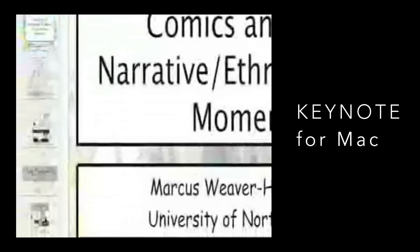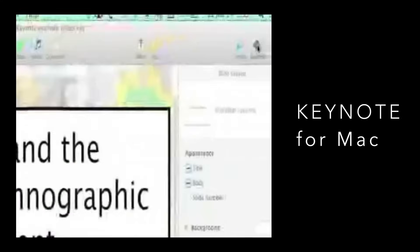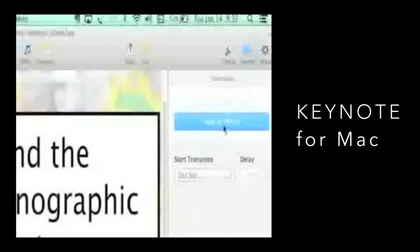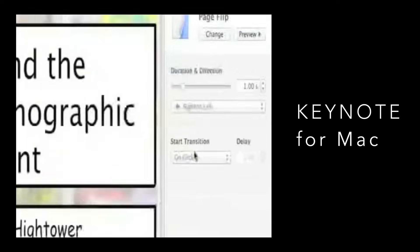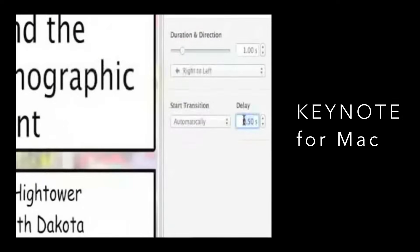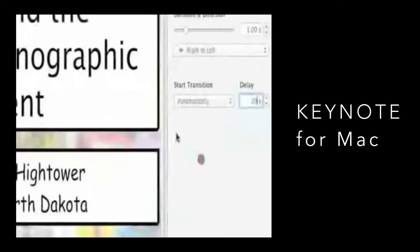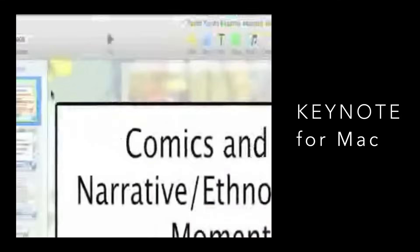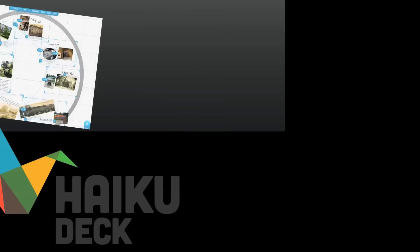Keynote for Mac is similar to set up. Select all your slides, click the Animate menu, click Add Effect, then choose a simple transition. In the contextual menu below, click to pull down the menu for Start Transition and choose Automatically. Enter 20 seconds in the Delay text box. If you're successful, a blue triangle shows up in the thumbnails for the slides.